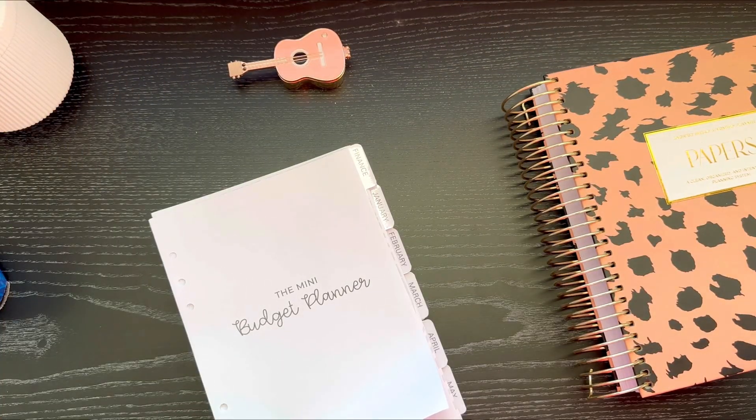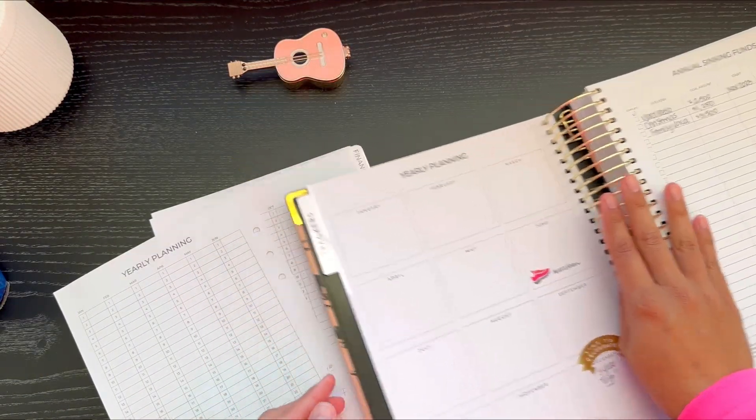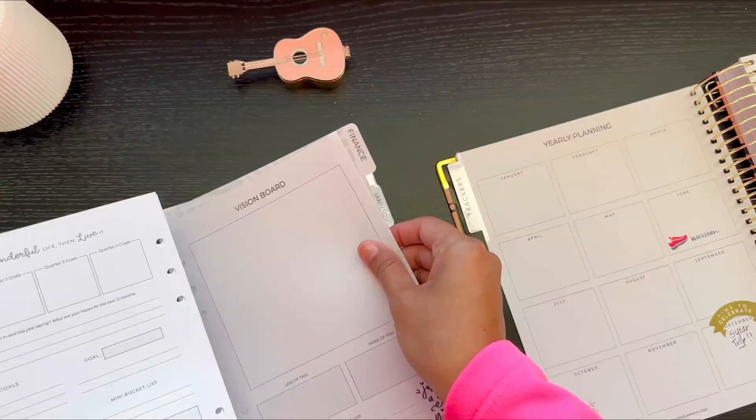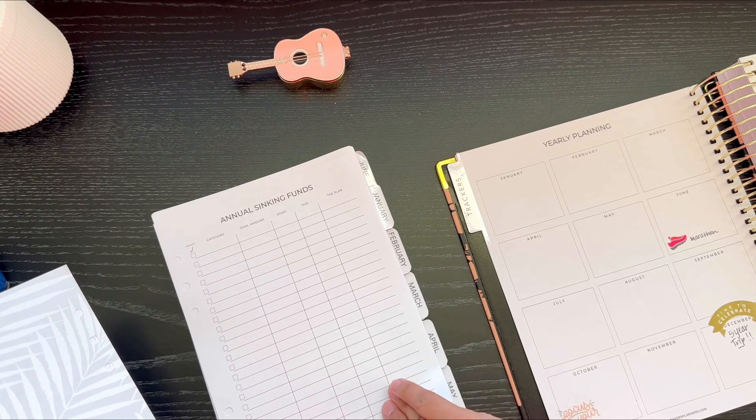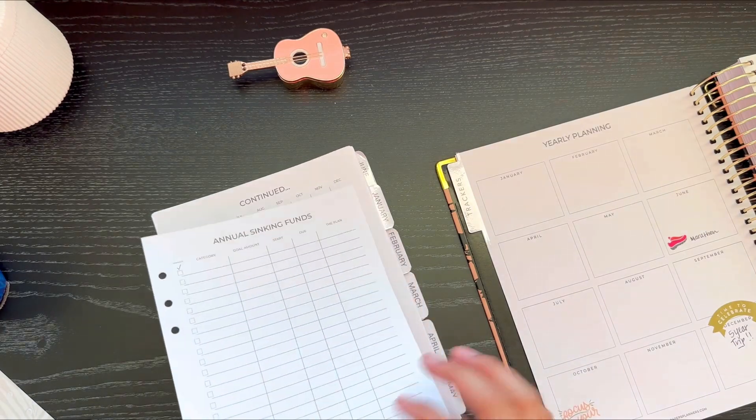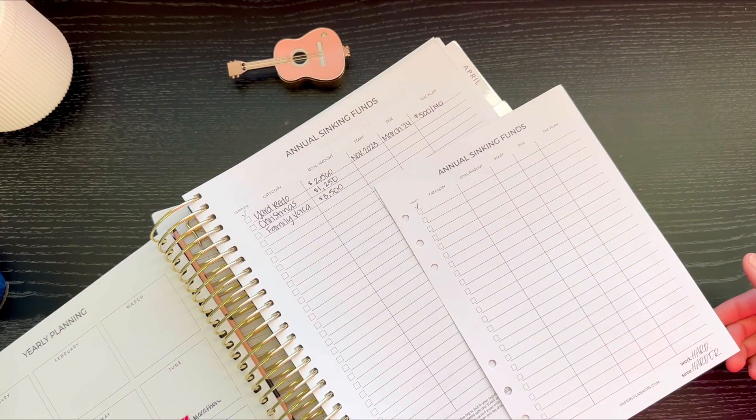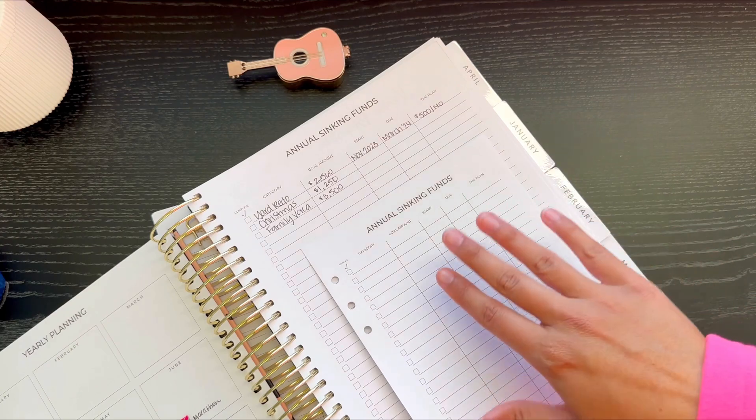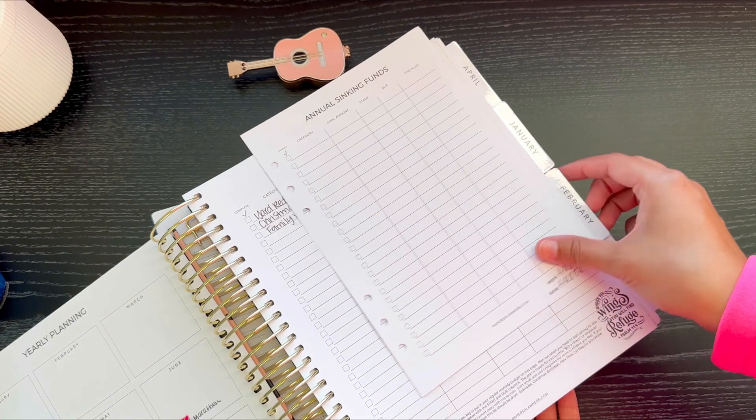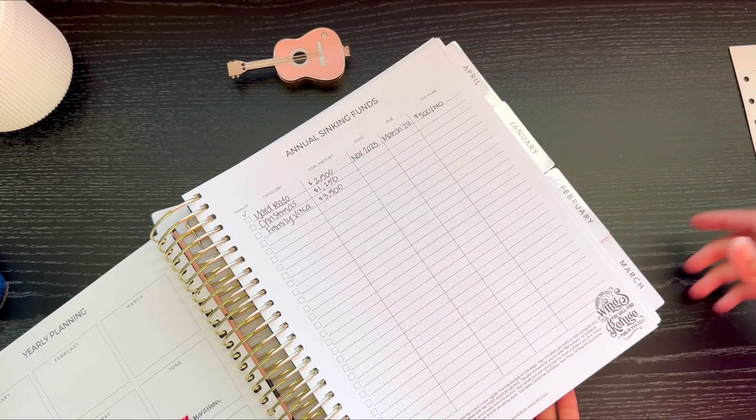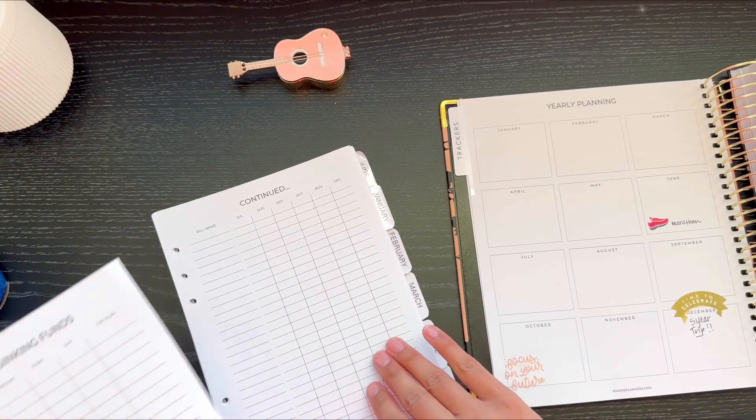I wanted them to be very similar to the dividers that we have in the traditional planner. Now I'm going to try really hard to do kind of a side-by-side. So we have the yearly planning with two pages and then you have the box yearly instead of the day-by-day. You then go to the vision board, it matches the same as the big planner. Then you get the annual sinking funds, same as our traditional planner. So this is the regular planner and this is the mini. The changes are so small that you really don't see a huge difference.